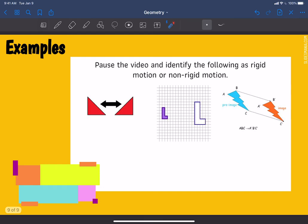So go ahead and pause the video right now and figure out which of the following, what each of these transformations represents, whether it's a rigid or a non-rigid motion. So go ahead and pause the video. This is example one, two, and three, and identify each of those transformations.